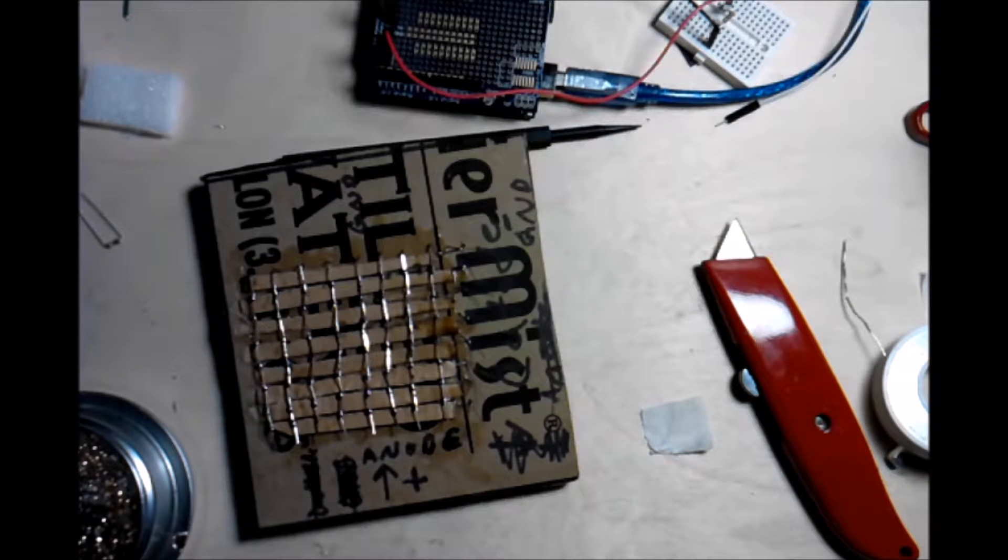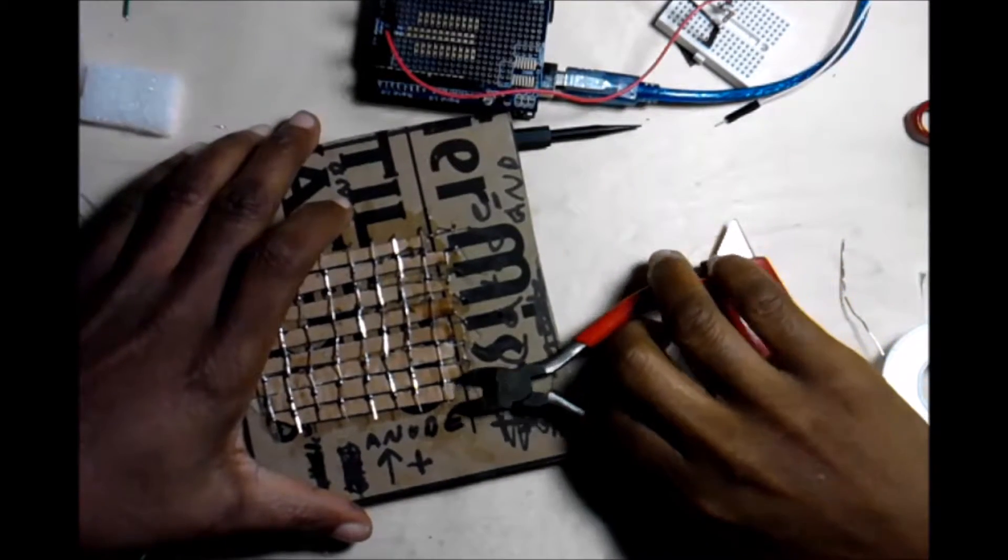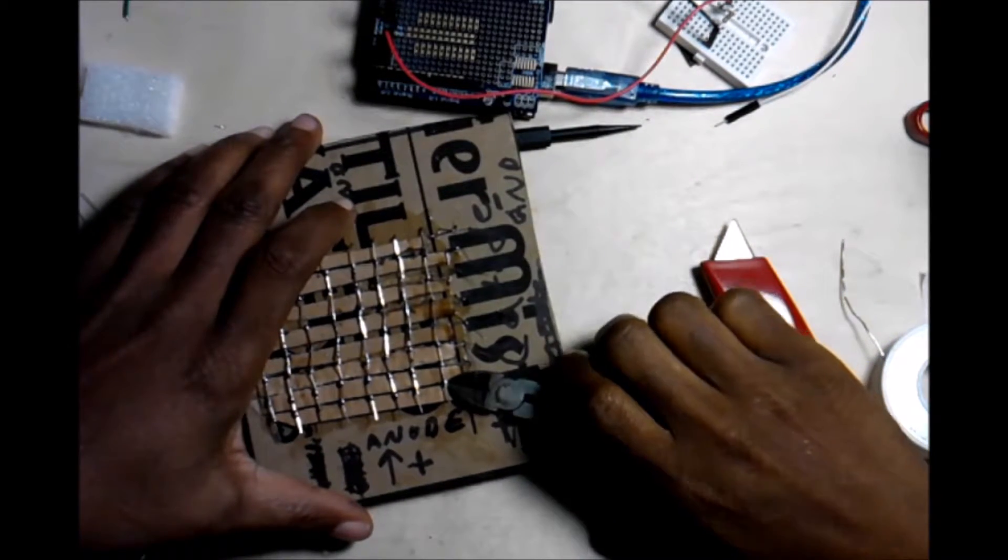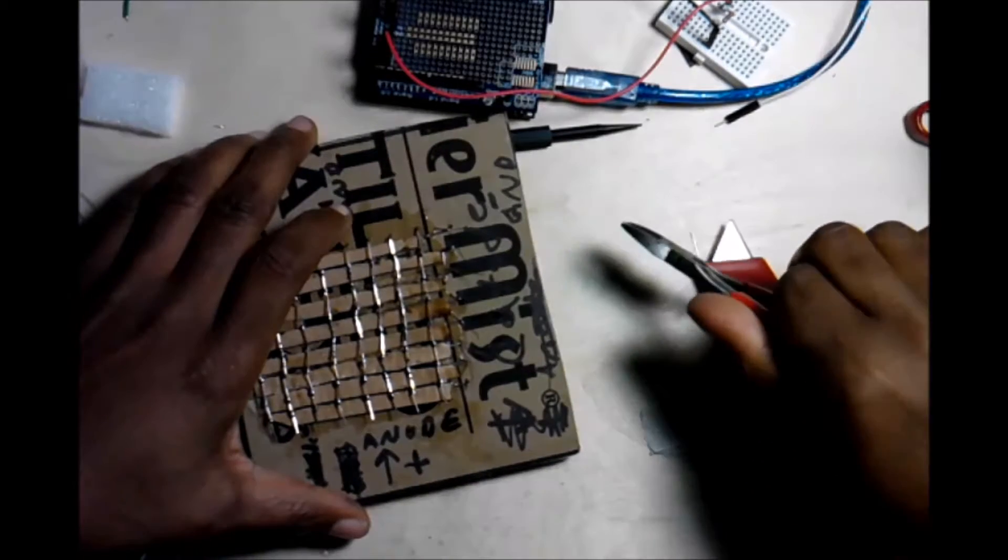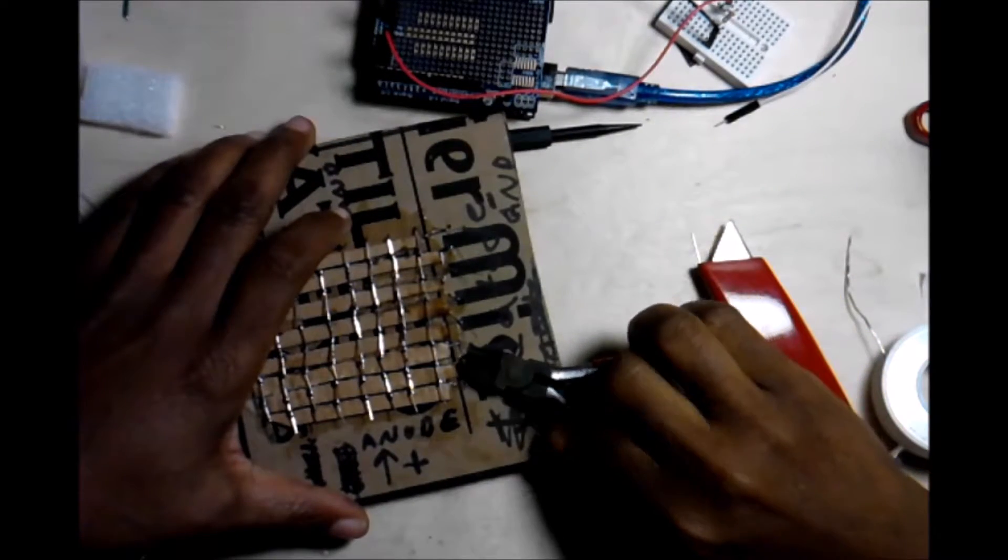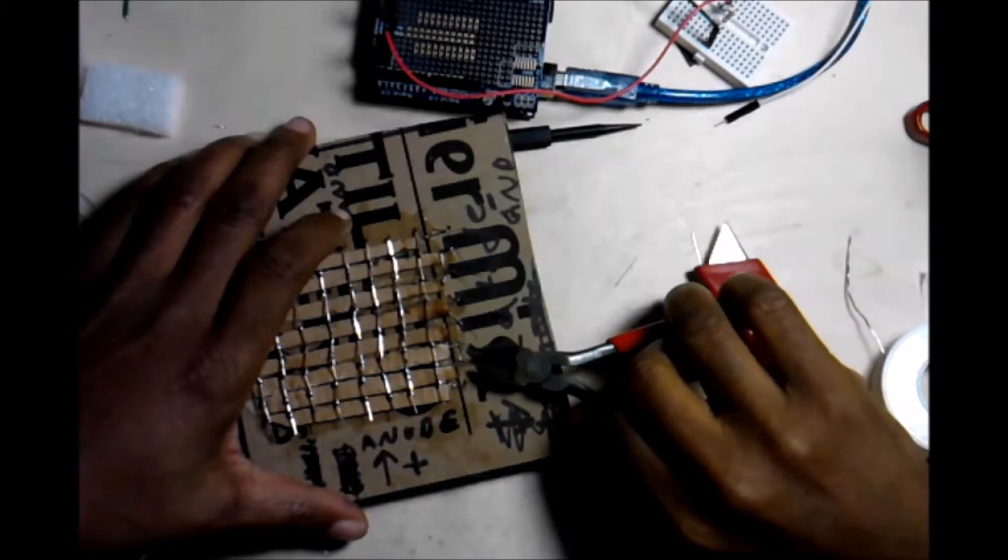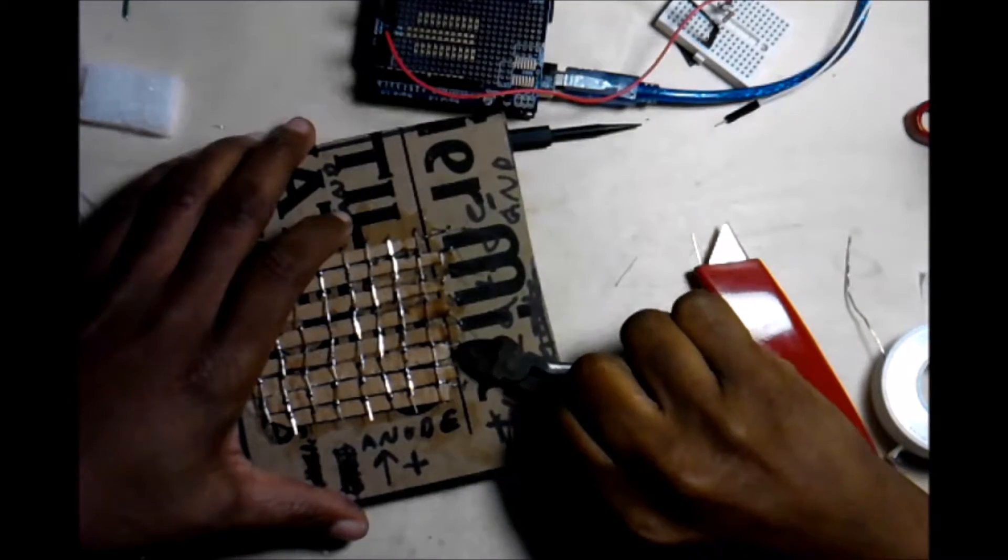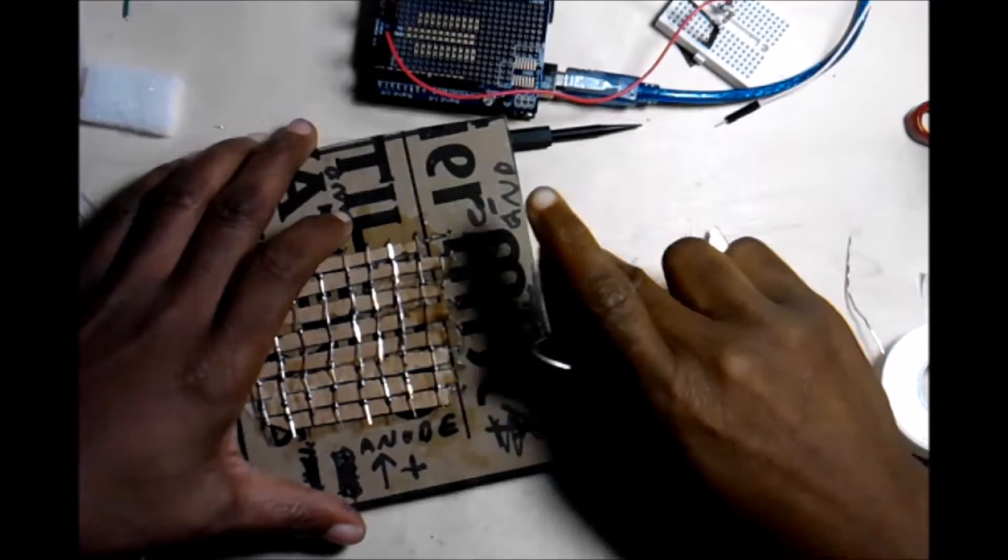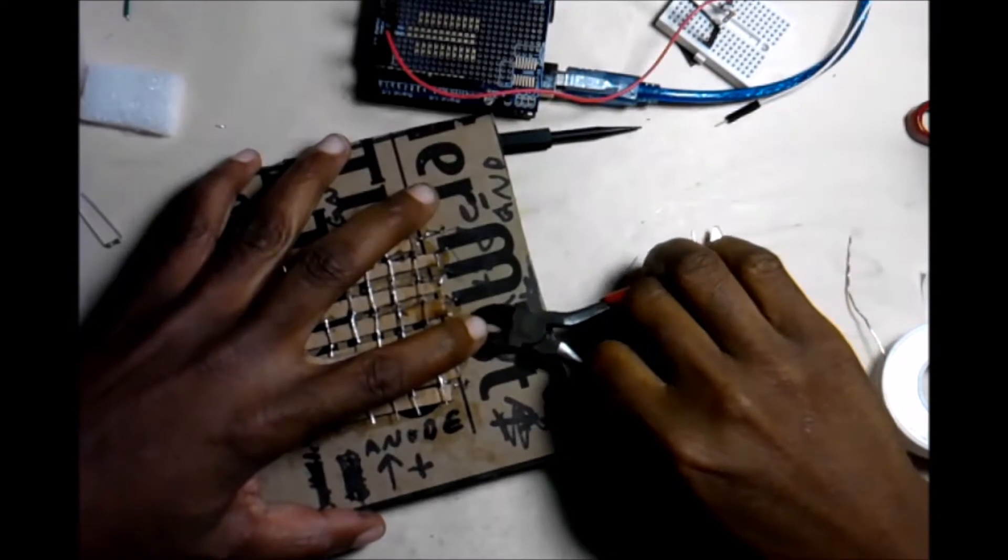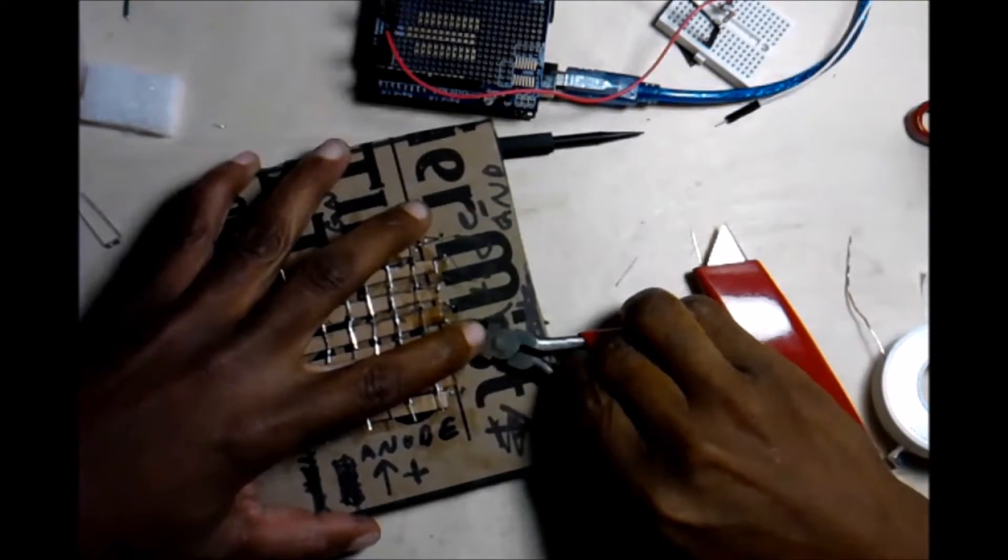We're gonna take our snips because there's no point in that being there because the lead is on the other side, and we're going to snip off the lead. Making sure not to, and see how that popped off. You want to put your finger on there to keep it from popping off. The worst thing you want to happen is that pops off in your eye.